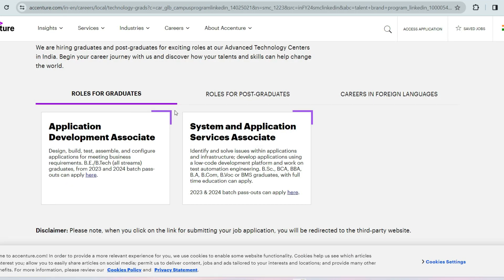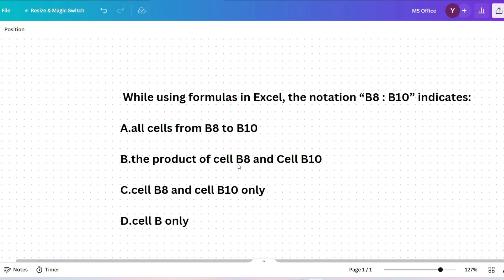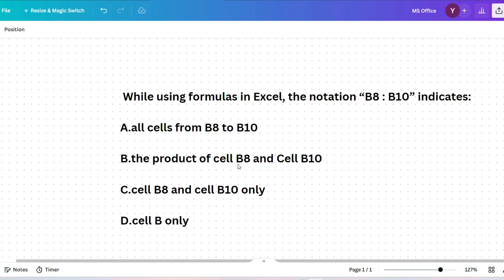Let's see some important questions from MS Office. The first question is: while using formulas in Excel, the notation B8:B10 indicates all cells from B8 to B10, the product of cell B8 and cell B10, cell B8 and cell B10 only, or cell B only. So B8:B10, I think you might have used in some sum. This returns the addition of all the values from B8 to B10. That's why the answer should be all cells from B8 to B10.